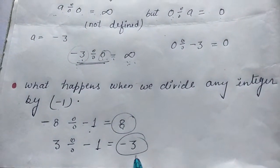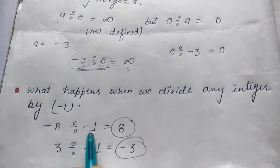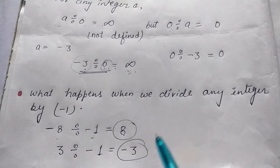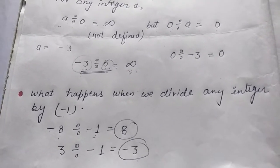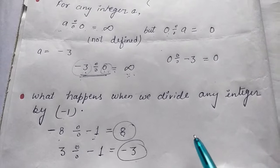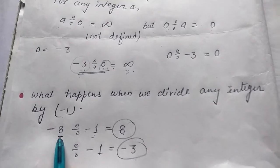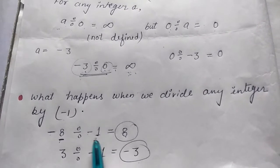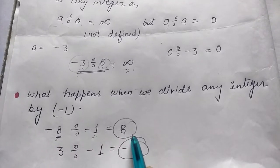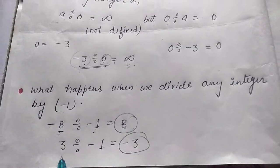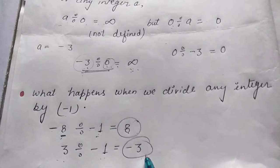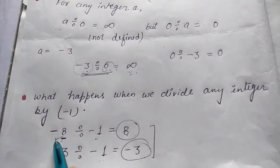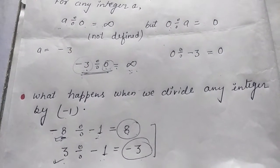8 is positive and minus 3 is negative. Toh agar hum minus 1 se kisi integer ko divide karein, toh zaroori nahi hai hamaara answer hamesha same aaye — same means negative hi aaye ya positive hi aaye. Woh depend karta hai hamaari number par. Agar integer negative hai, toh minus 1 se divide karne par answer positive ho jaayega. But agar integer positive hai, toh minus 1 se divide karne par answer negative ho jaayega. Toh isme koi fix answer nahi hai.